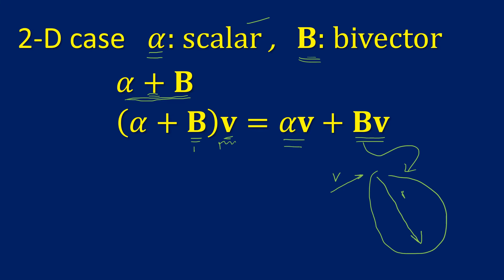Alpha times v, of course, is another vector. So what has happened? By multiplying this sum by a vector in the two-dimensional case, we get another addition which is just this familiar addition of vectors. So this addition of scalar and bivector has morphed into vector addition.